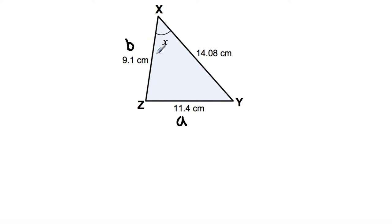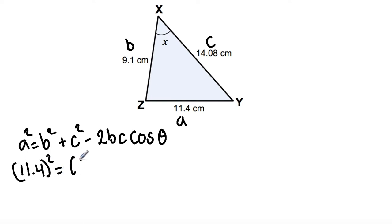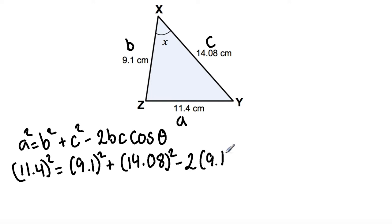It doesn't really matter which way you label B and C. Writing the cosine rule: A squared is equal to B squared plus C squared minus 2BC cos theta. Substituting in the values: A is 11.14, so 11.14 squared; B is 9.1 squared plus 14.08 squared minus 2 times 9.1 times 14.08 cos theta.